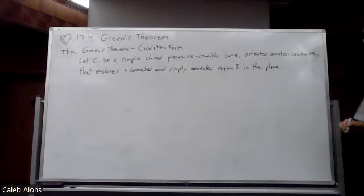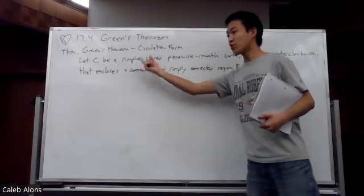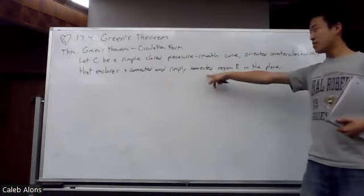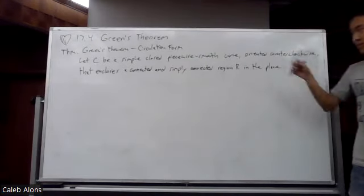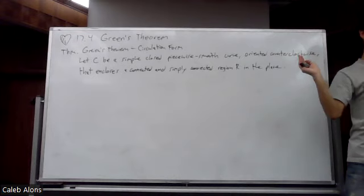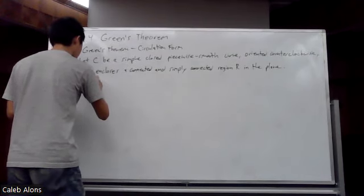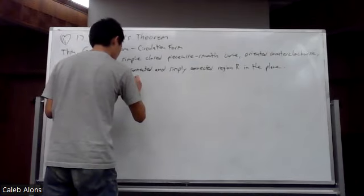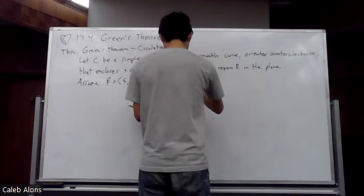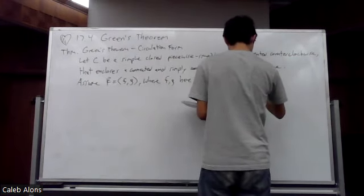These vocabulary terms basically mean: don't have a weird curve intersecting itself or breaking apart, make sure it's going in the right direction so the right-hand rule works, and make sure the region you're enclosing is nice. A connected simply connected region R in the plane is basically just a region that looks like a region. Now assume the field F equals (f, g), where f and g are scalar functions with continuous first partial derivatives over the region.